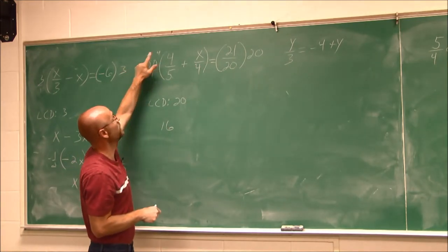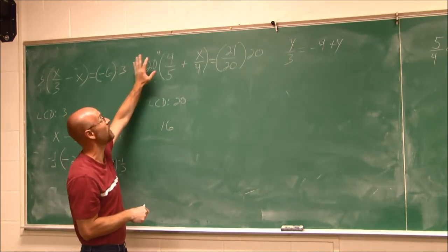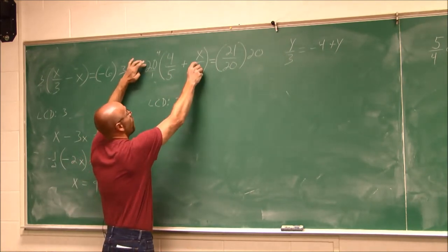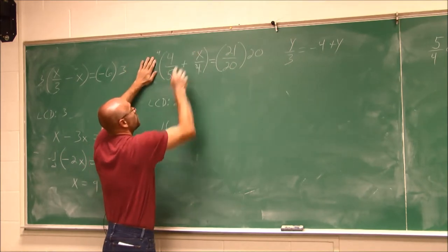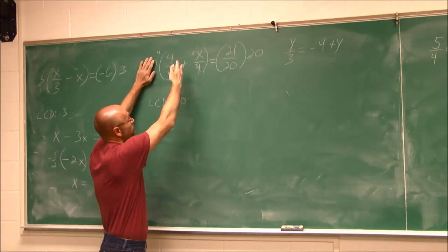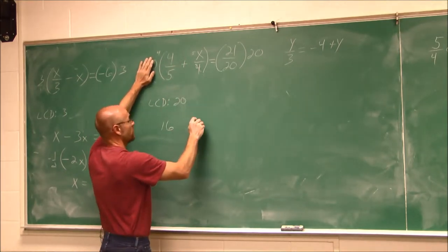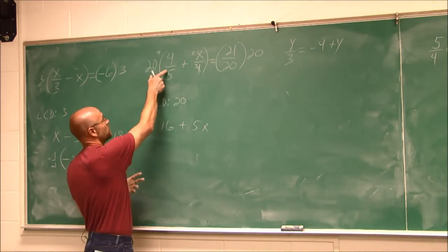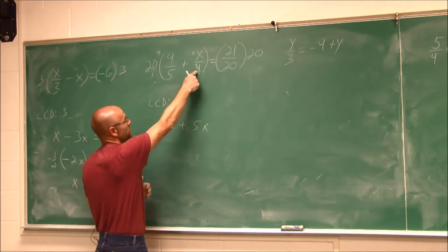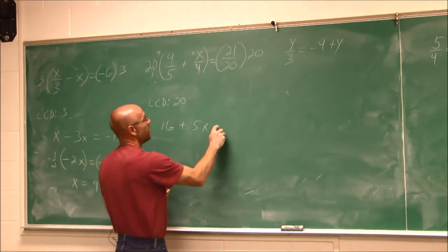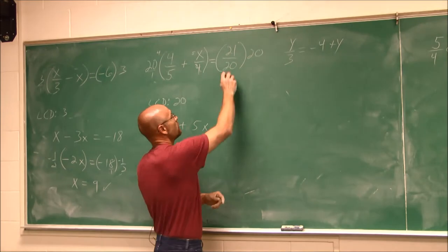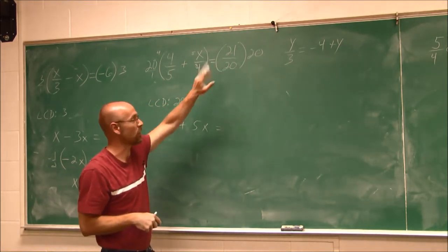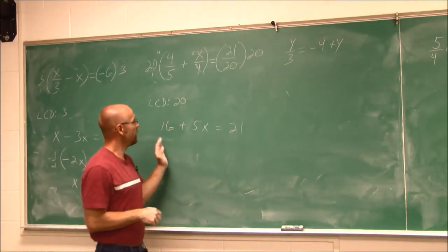And then we distribute the 20 to this term. That's why I didn't cross this out, because I have to use it during the distribution. But the same thing's going to happen. The 4 will reduce this 20 to a 5. And now I can multiply. 5 over 1, or 5 times x, is going to give me 5x. And it's a positive. So we have 16 plus 5x. I just distributed this to get that. Distribute it to this to get that. And now we work to this side. 20 over 20 reduces altogether. And I don't have to worry about remembering what value, because there's only one term there.